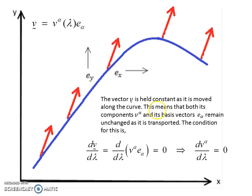And what it means is that both the components and the basis vectors are held constant, they're not changed. And the condition for this is, down here, the derivative with respect to lambda of the vector v gives us this condition here: dv^α/dλ is zero, that's the components of the vector, the derivative of them with respect to the parameter is zero. So that's in flat space.